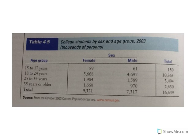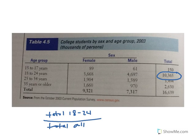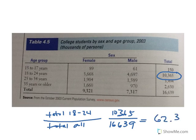Since percents are more informative, it might be very useful to know each of the totals on the right-hand side expressed as percents. For example, to find what percent of all college students are in the 18 to 24 age group, I take the total for that group and divide by the total of all college students: 10,365 divided by 16,639. That gives me 0.623, or 62.3%.